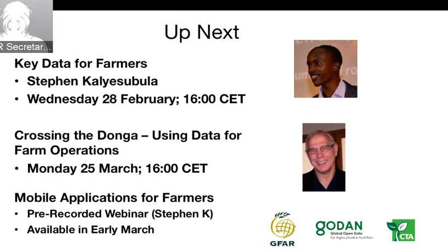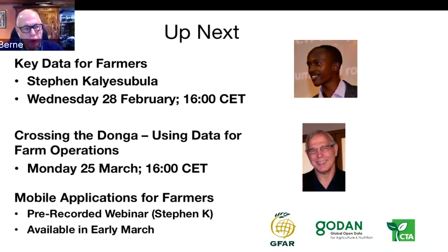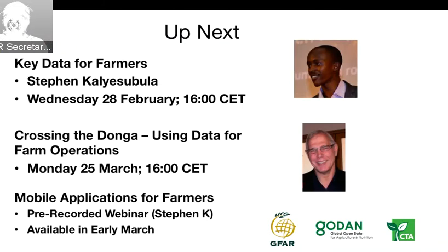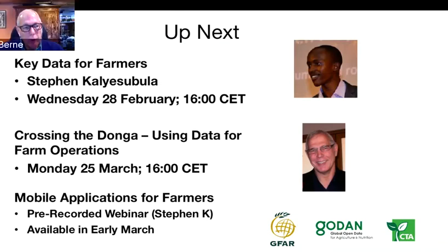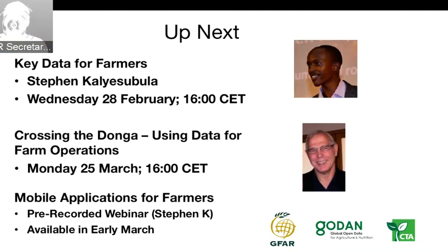Lenin asks: are there guidelines on how to compensate farmers for their data? There is a standard — the American Farm Bureau came up with a list of standards on how companies should be transparent about how data is used. The issue is that when you as a farmer give your data to a third party, if you're following intellectual property law, it's not considered your intellectual property at that point because someone else collected it. It's still a very open question that the industry is working through.